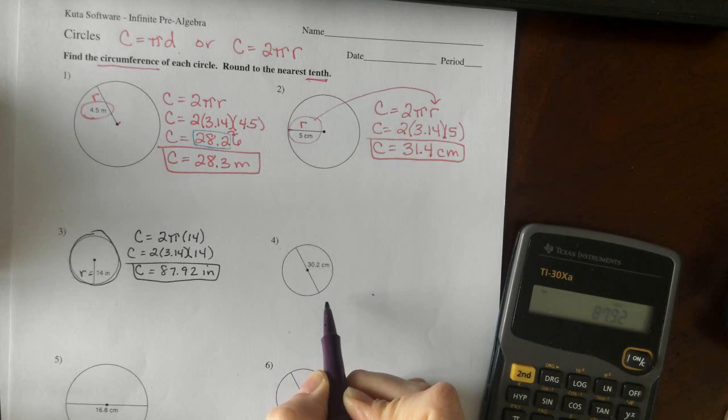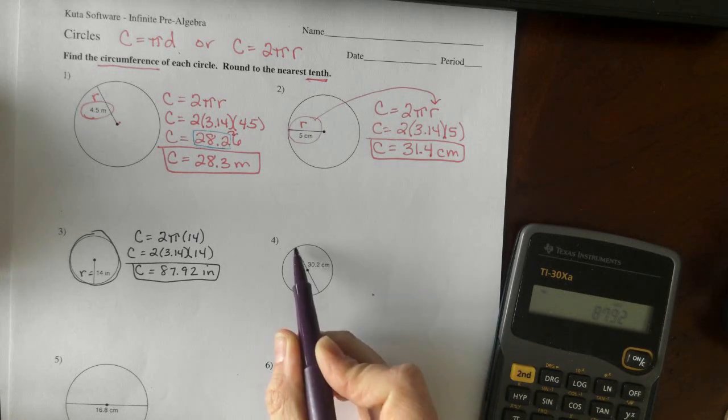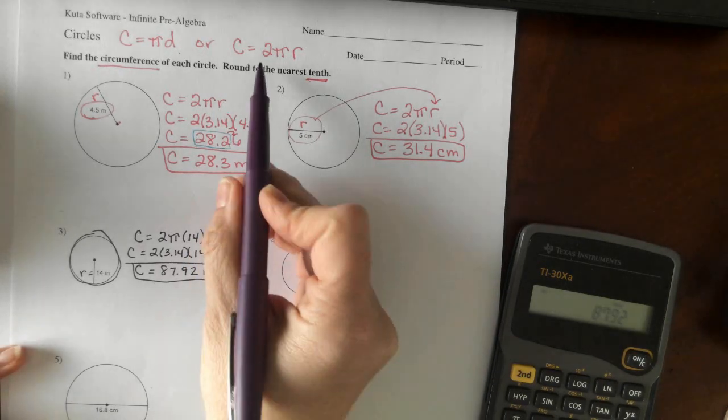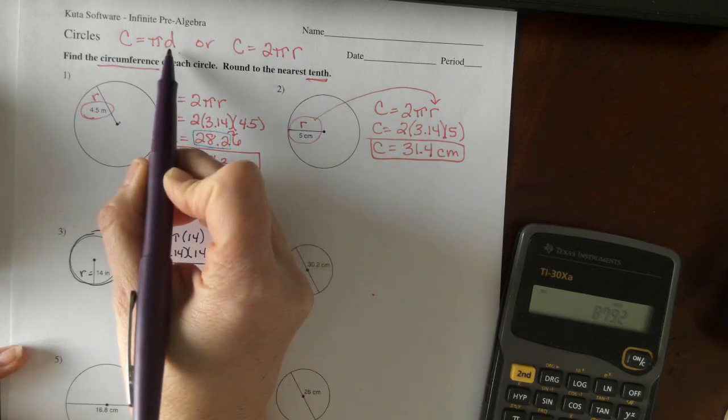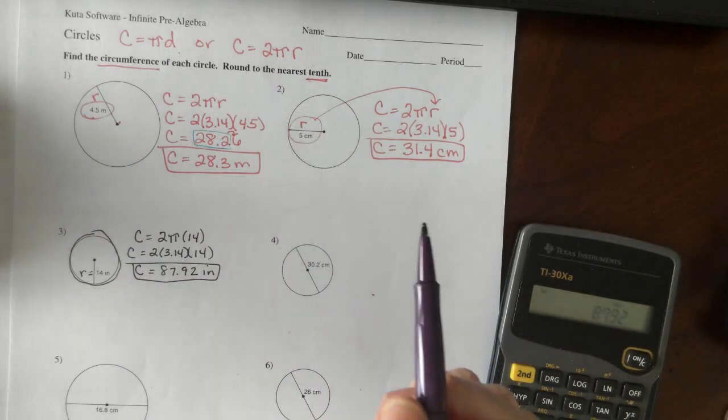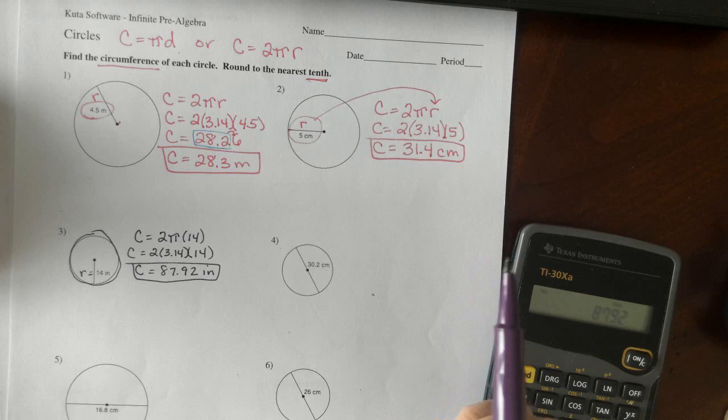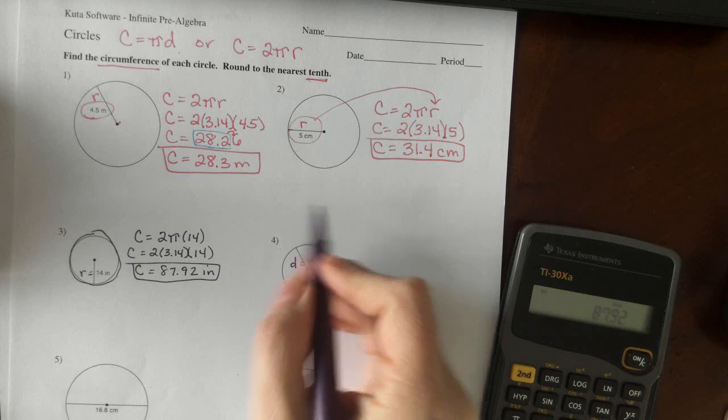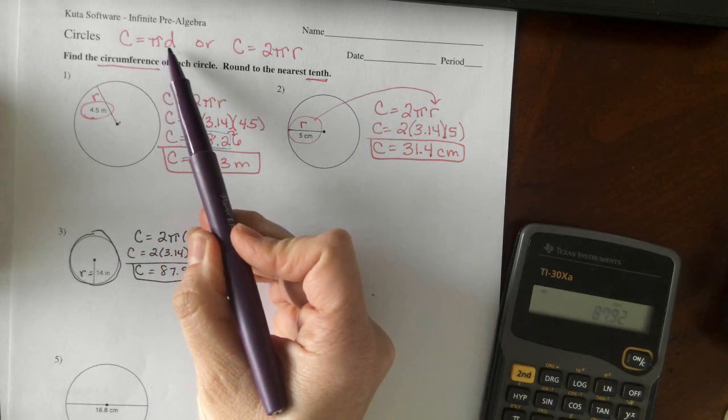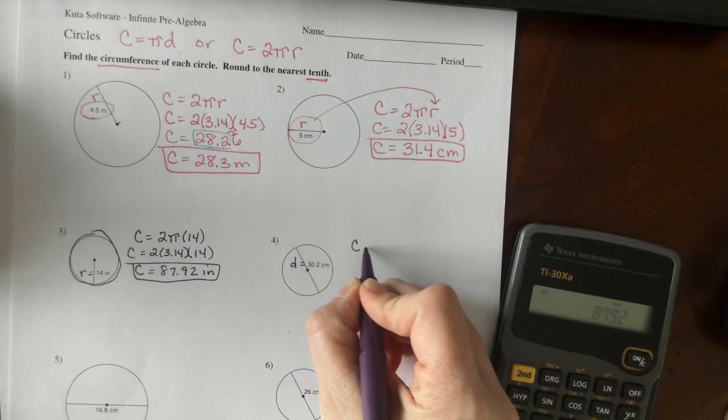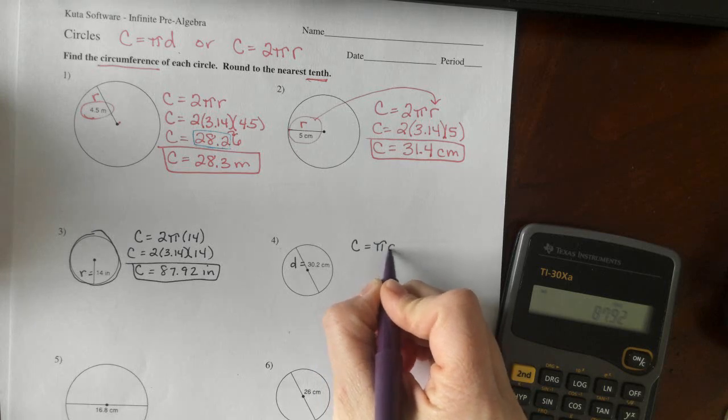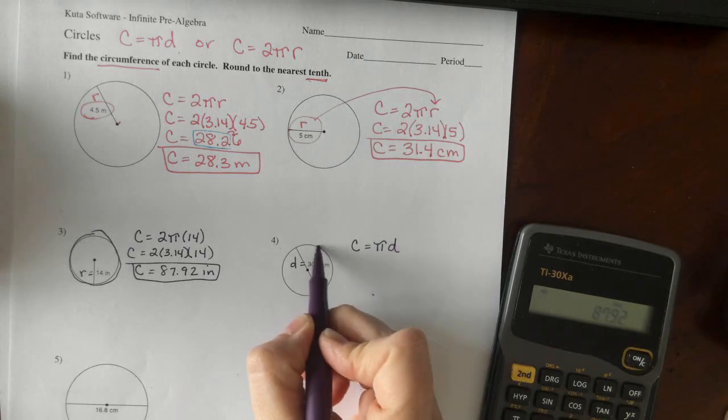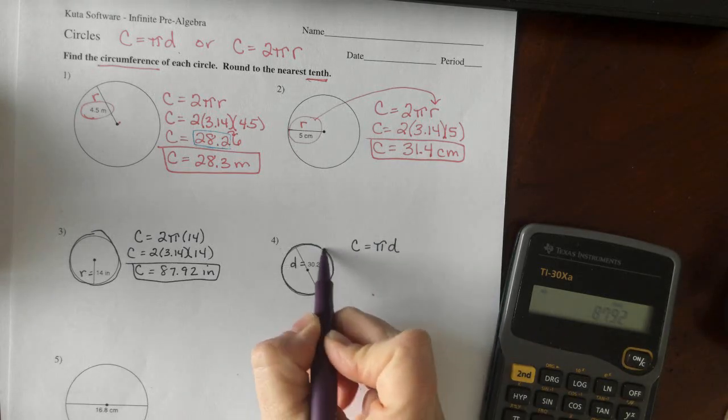Diameter goes all the way across. Radius is half of it, which is why 2 times the radius is the same as the diameter. That's why we have the two different equations. We have diameter this time, so I'm going to use pi times diameter. Pi times the diameter gives me the distance around the shape.